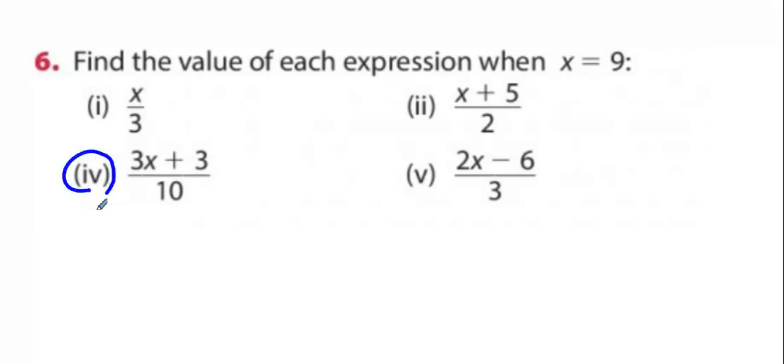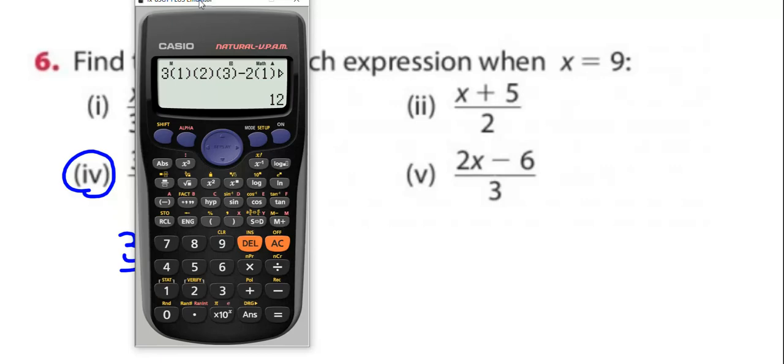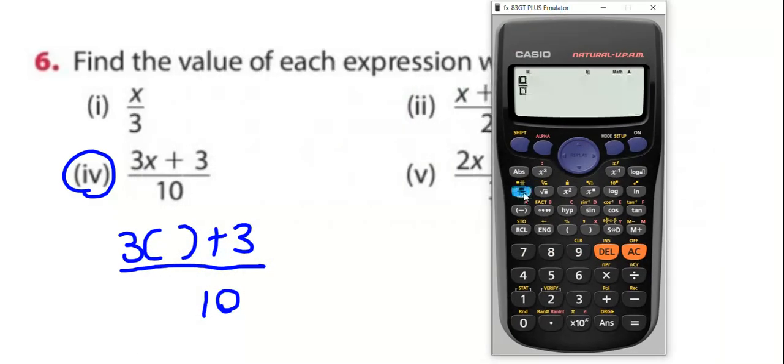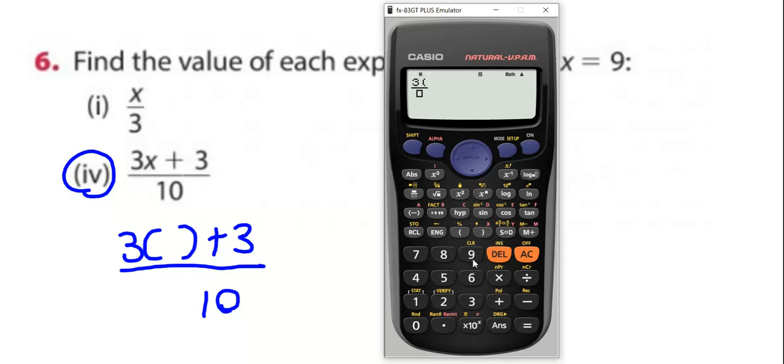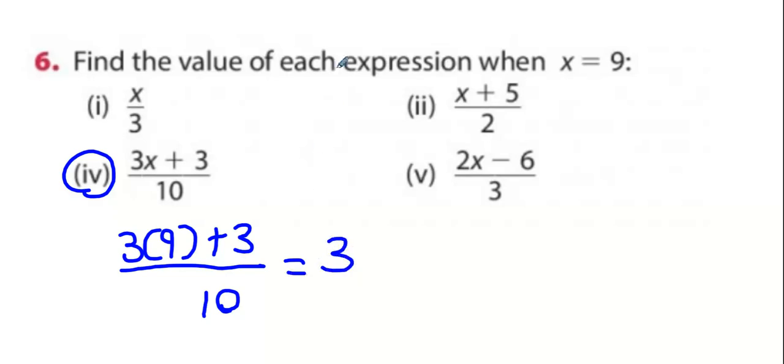I'm going to do part four. Press three, open bracket, plus three over ten. Go to your calculator. Press the fraction button first. Then press three. And what goes into the bracket? The question said X is nine. So it's three bracket nine plus three all over ten. And we get an answer of three. I want you guys to do these, just these two, the two in red. Don't do part two.